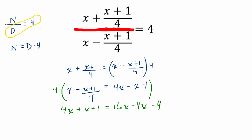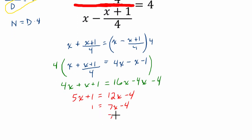And this is now looking even more manageable, this is exciting. 4x plus x is 5x plus 1. Over here, we have 16x minus 4x is 12x minus 4, and I'm going to subtract 5x from both sides and I get 12 minus 5, which is 7x. I'm going to add 4 to both sides, 7x equals 5, and x would equal 5 divided by 7, and that's our answer.